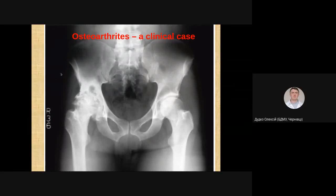How to describe an X-ray with osteoarthritis? X-rays are the simplest and cheapest way to reveal changes in the joint. We may reveal problems with the articular surface, deformity of the joint, axial deformities, and different stages of osteoarthritis can be found.